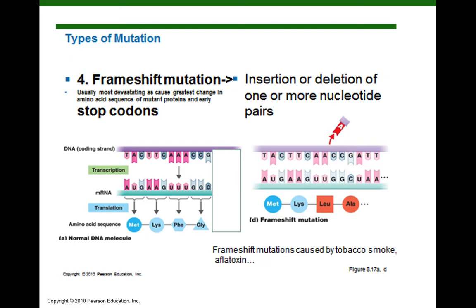The concern is that unethical peanut producers might grind up moldy peanuts to make peanut butter, hiding that they were moldy. Children eat a lot of peanut butter, so the government samples and analyzes peanut butter to make sure there isn't any aflatoxin present.